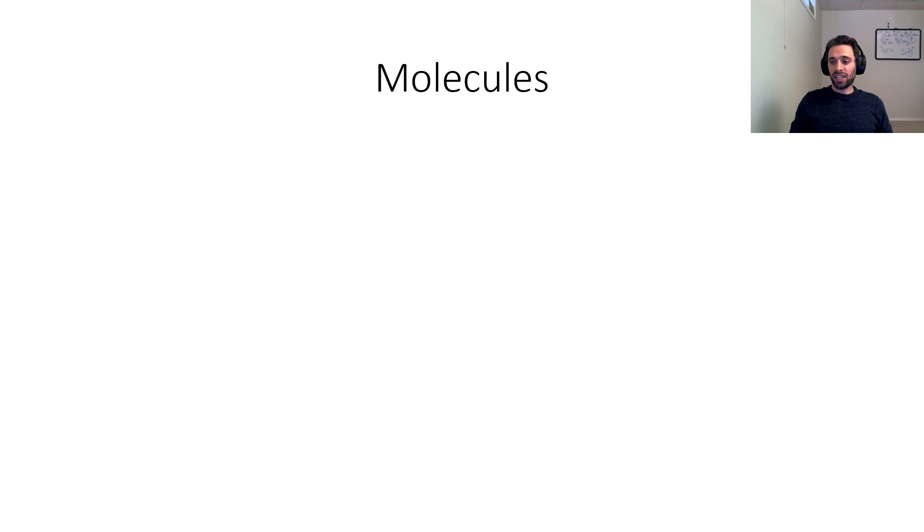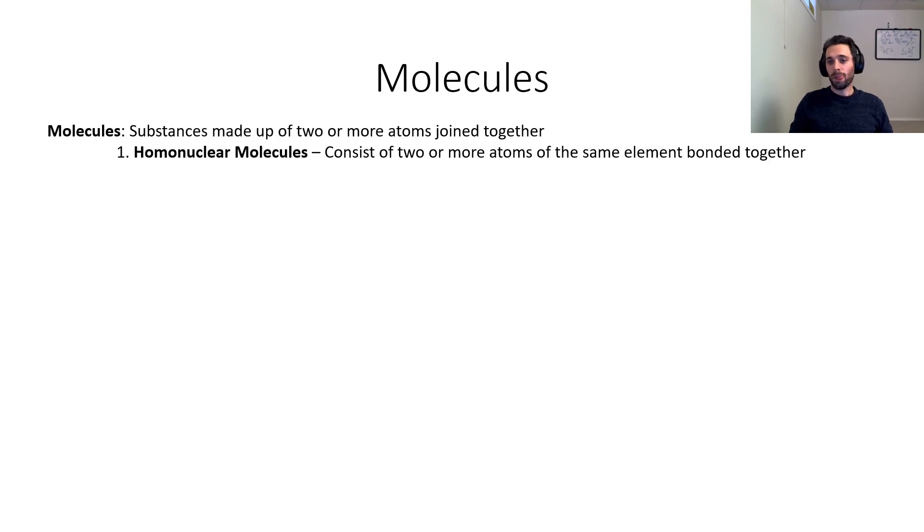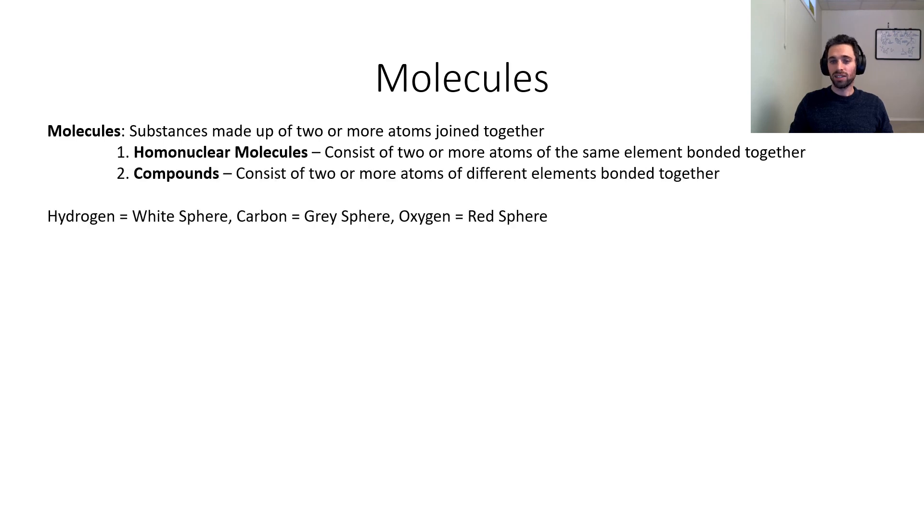The next definition we get to is that of molecules. Molecules are substances made up of two or more atoms joined together. We have two types: the first type is a homonuclear molecule, which consists of two or more atoms of the same element bonded together. The second type is a compound, which consists of two or more atoms of different elements bonded together. Let's look at the following examples.